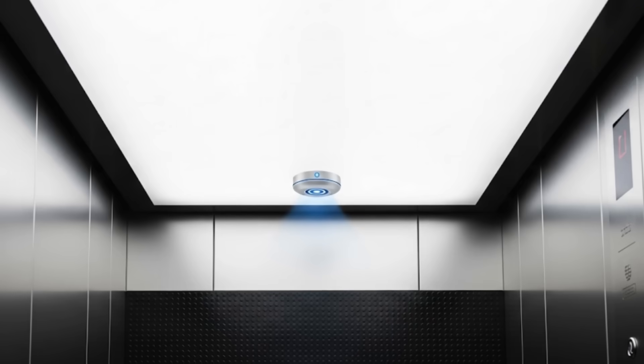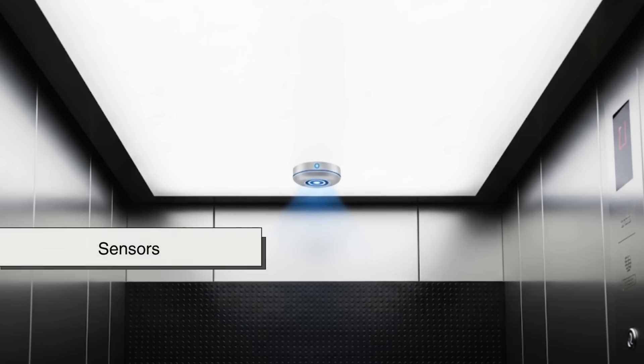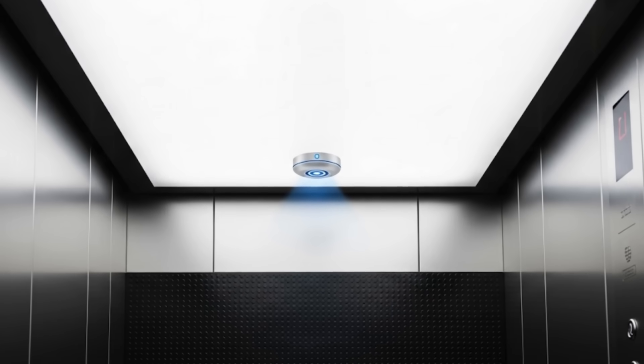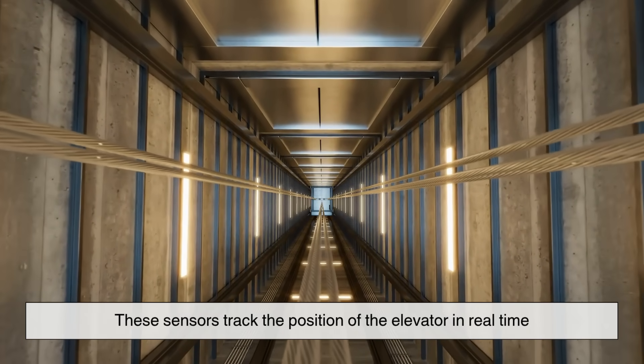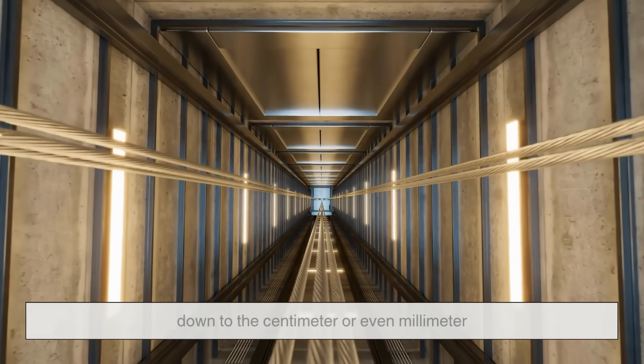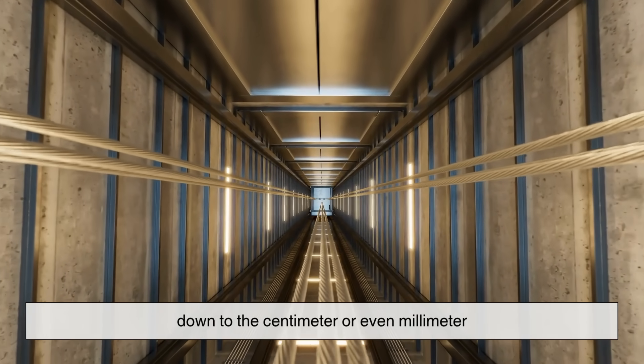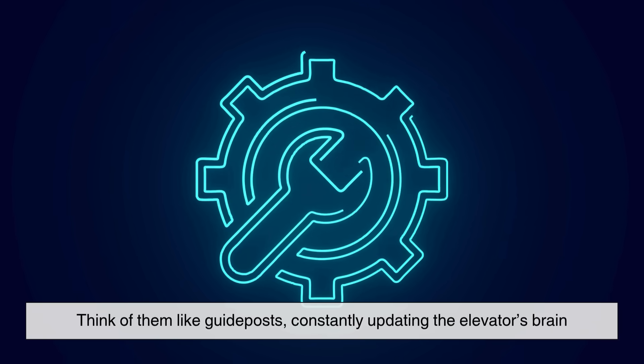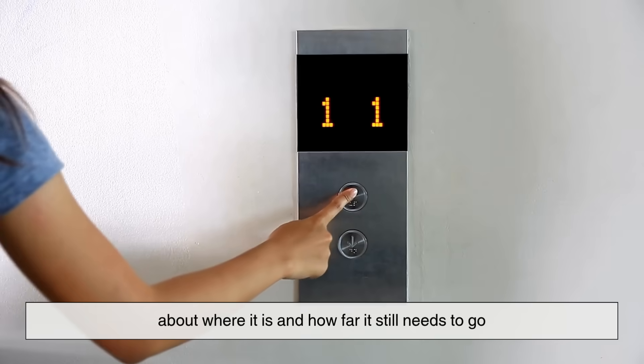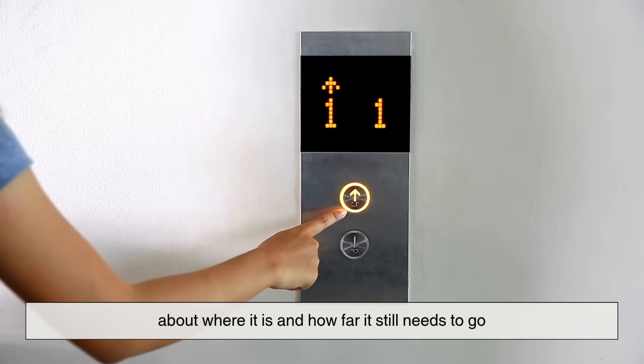Helping with that precision are the sensors placed inside the elevator shaft and the car itself. These sensors track the position of the elevator in real time, down to the centimeter or even millimeter. Think of them like guideposts, constantly updating the elevator's brain about where it is and how far it still needs to go.